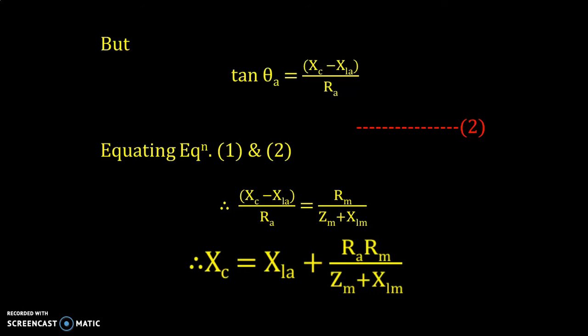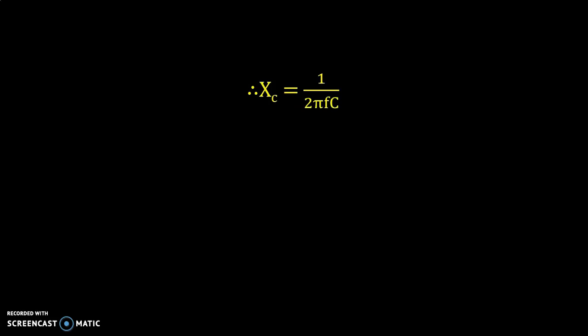With this equation we will be able to find the value of XC, which is the reactance of the capacitor. Once we have the value of XC, we know that XC = 1/(2πfC), where C is the capacitance. Therefore, capacitance C = 1/(2πf × XC). With this, we can calculate the value of capacitor to generate maximum starting torque. Thank you for watching my video, keep watching, thank you very much.